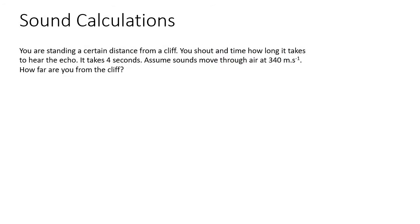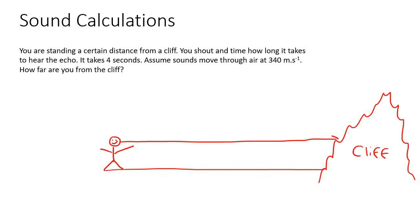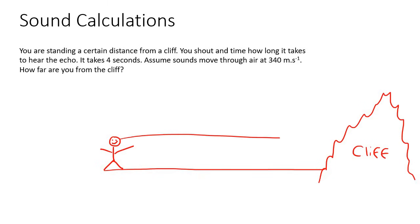Now we're going to start getting to echo. You are standing a certain distance from a cliff. If you shout, your sound waves go from your mouth to the cliff, hit the cliff, and then come back towards you — you hear yourself, and that is an echo. It's almost like you hear exactly what you shouted coming back at you.